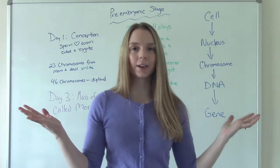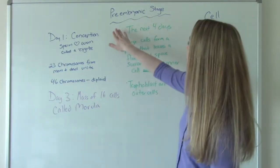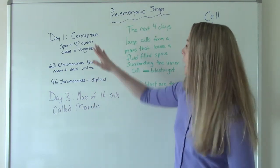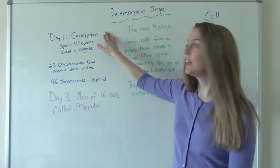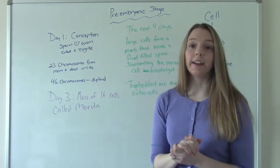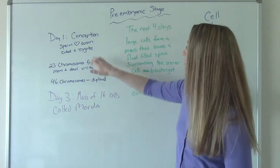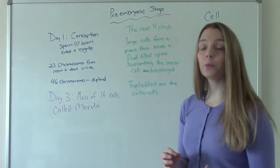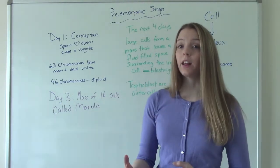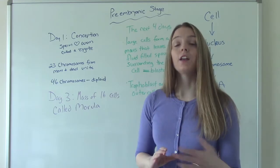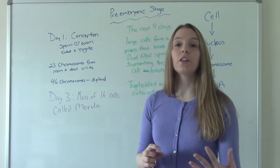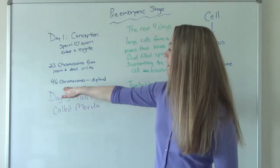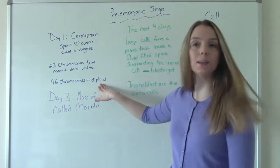The pre-embryonic stage lasts the first two weeks. What happens on day one is conception — the sperm and the ovum unite, usually in the fallopian tube, and they form something called a zygote. This is composed of 23 chromosomes from mom and 23 chromosomes from dad. 23 chromosomes is a haploid number, and when they combine that's 46, which is a diploid number.